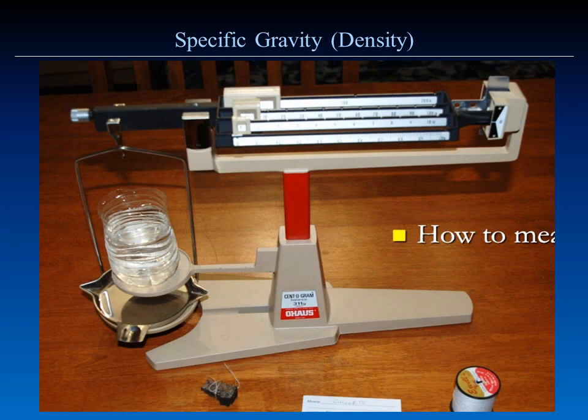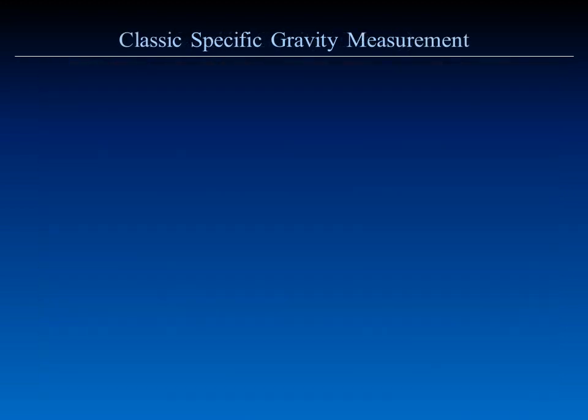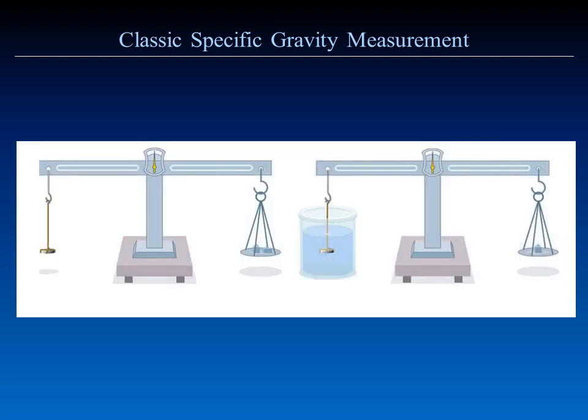The classic method for measuring specific gravity and density usually involves a lab balance scale and a glass of water to suspend the mineral in. Let's review the classic method of measuring specific gravity taught in textbooks.